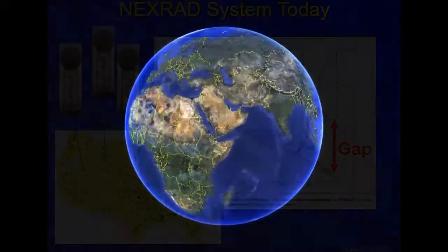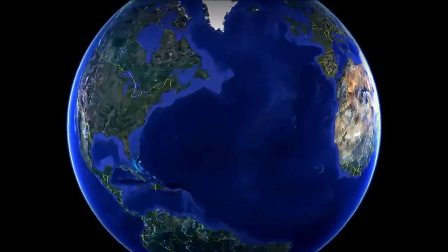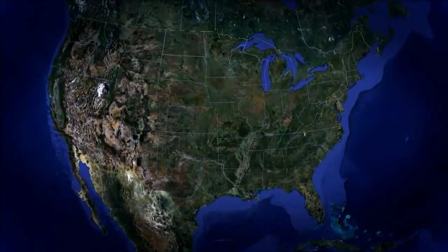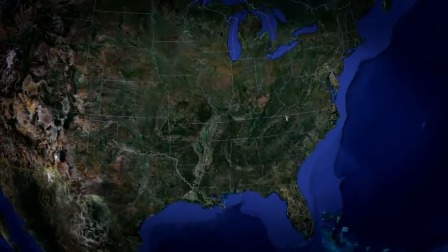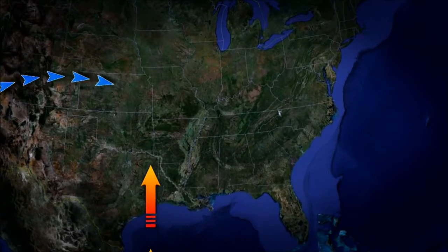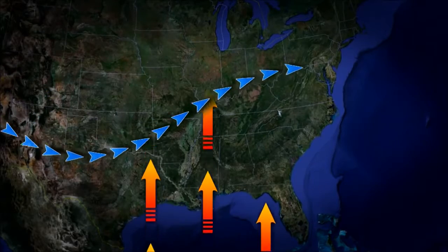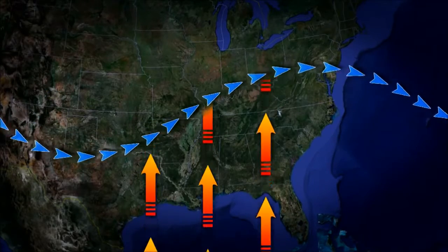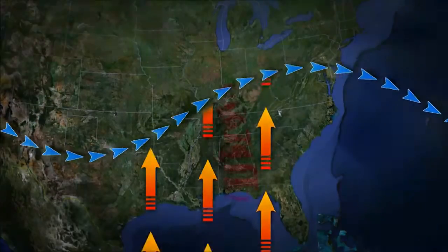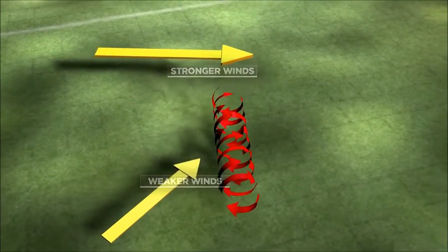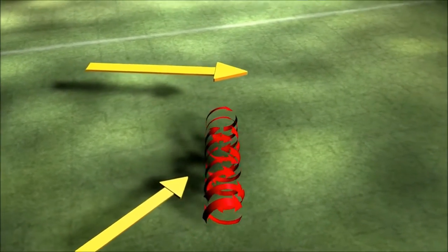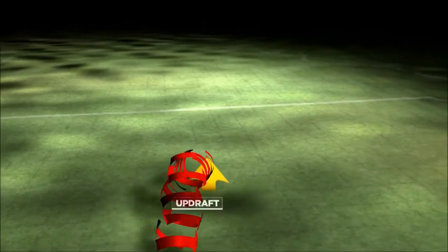While supercells can occur many places in the world, most occur in the central United States because of its unique geography and climate conditions during certain times of the year, when wet warm air moves up from the Gulf of Mexico and encounters the strong winds of the jet stream. These contrasting wind speeds and directions at different heights can cause a shift in the wind rotation of a thunderstorm, from spinning along a horizontal axis to twisting along a vertical one.